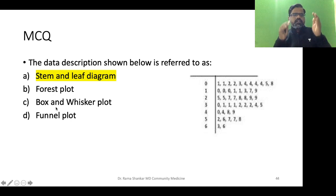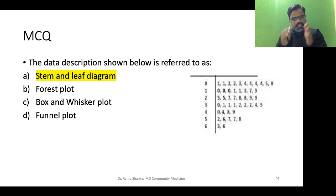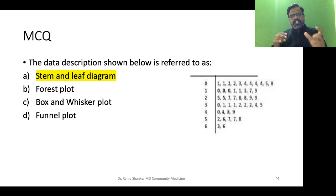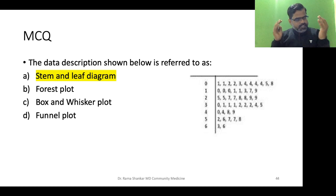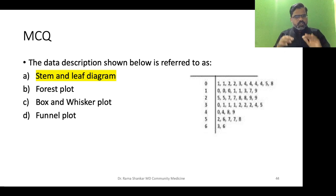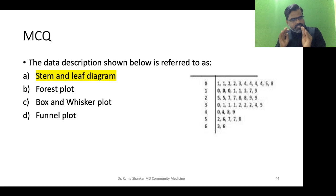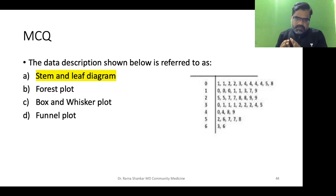It is not a forest plot — forest plot is used in meta-analysis where we plot all studies, using odds ratios with confidence intervals, and summarize with a diamond shape. It's not a box and whisker plot, which requires a box, whisker, lower and upper end representing quartiles. It's not a funnel plot — that's also part of meta-analysis. Even if you don't know stem and leaf, you can eliminate the others and arrive at the correct answer.